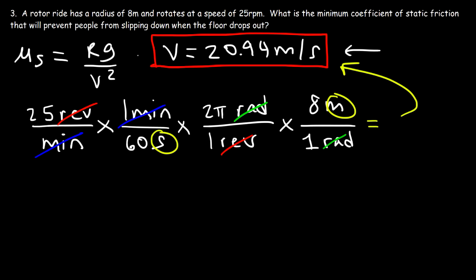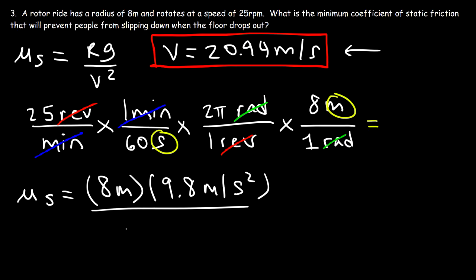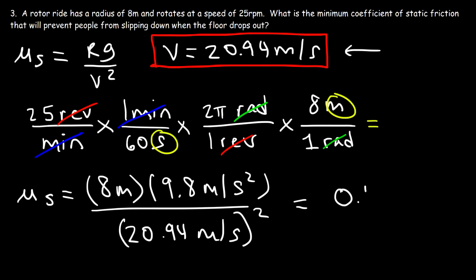Now that we have the speed, let's calculate the coefficient of static friction. Mu_s equals the radius of 8 meters times 9.8 m/s² divided by the speed of 20.94 meters per second squared. The result is 0.179 for the coefficient of static friction. That's the minimum amount needed so that when the floor drops out, the people won't slide down — static friction will support their weight.